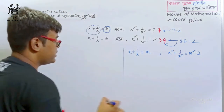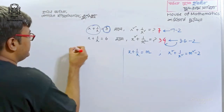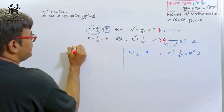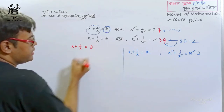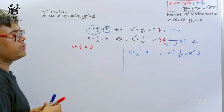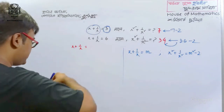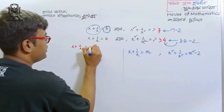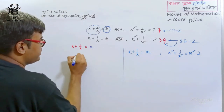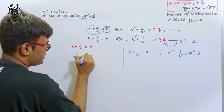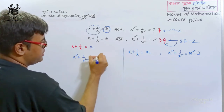The answer: x plus 1 by x is equal to 3. So the answer is x squared plus 1 by x squared.